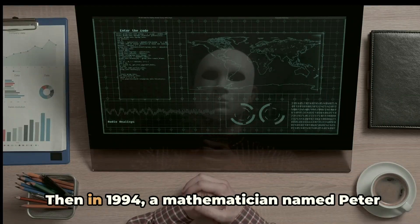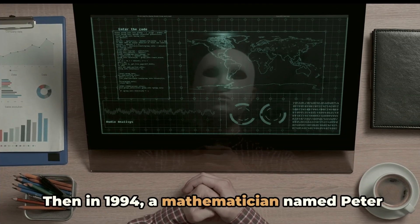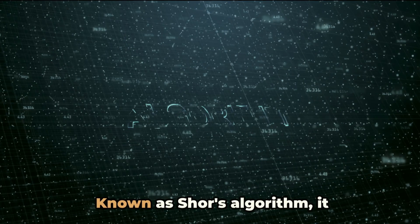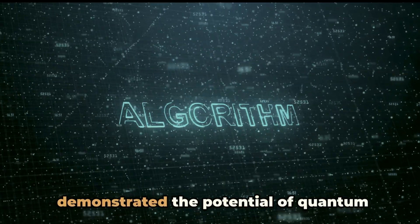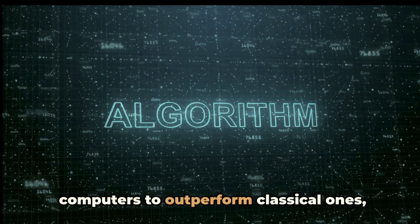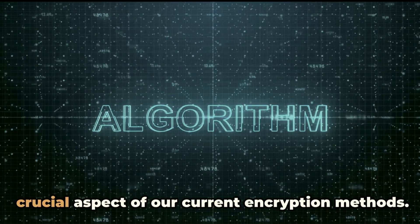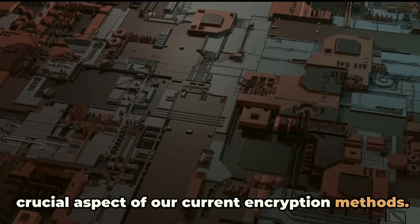Then, in 1994, a mathematician named Peter Shor developed the first quantum algorithm. Known as Shor's algorithm, it demonstrated the potential of quantum computers to outperform classical ones, especially in factoring large numbers, a crucial aspect of our current encryption methods.